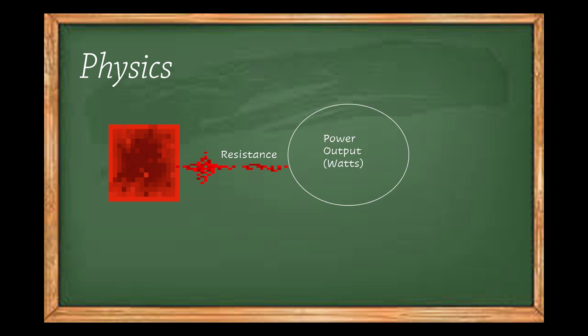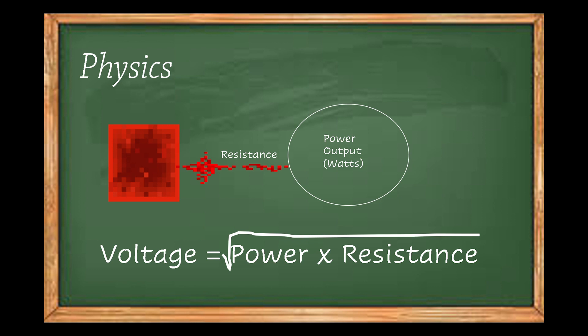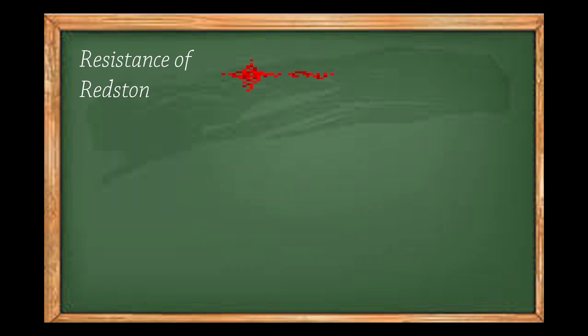From there, we can calculate the voltage according to this relationship. Voltage is the square root of power times resistance. So let's start with getting this resistance value. The resistance of a wire is given by the following equation: resistivity times length over area.